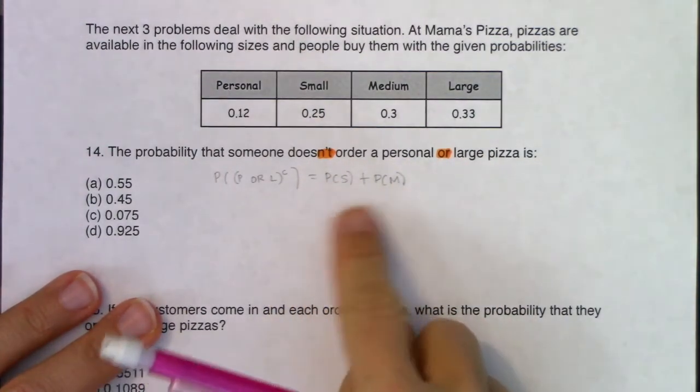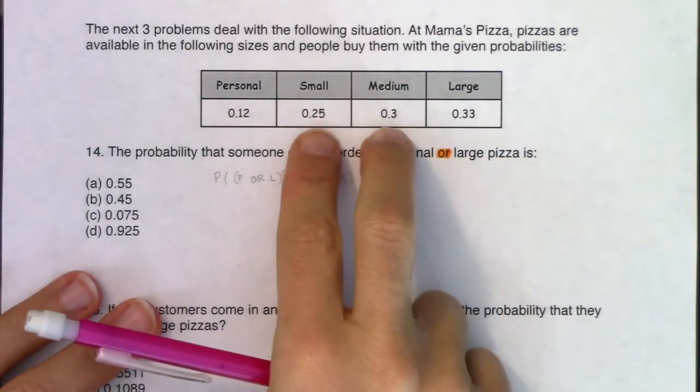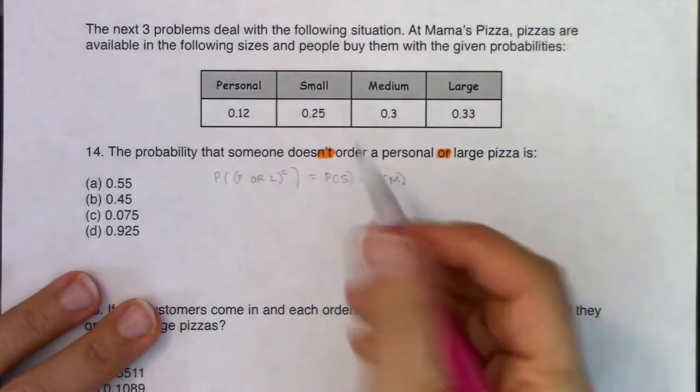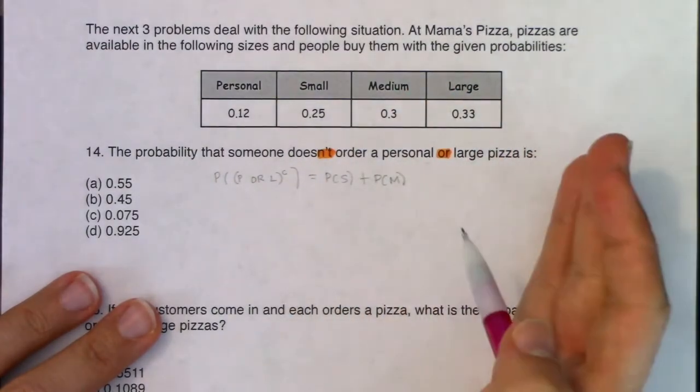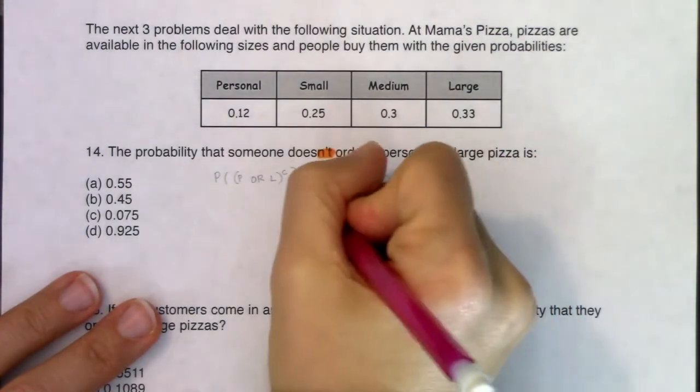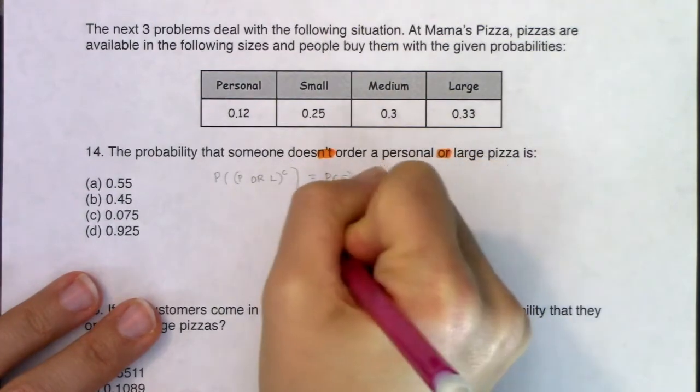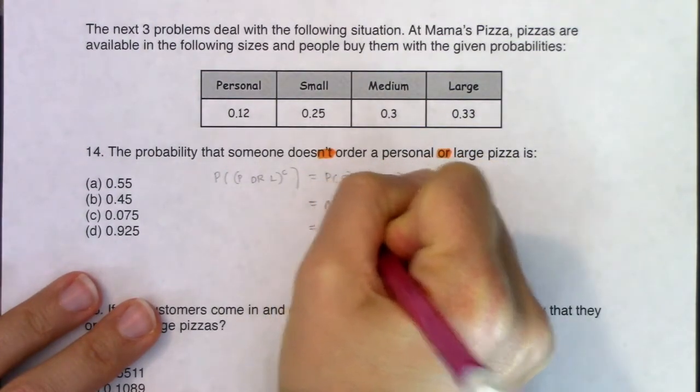So that's what's really happening. This is the probability that someone orders a small pizza or a medium pizza. With ORs we add the probabilities—we would subtract the overlap, but these are disjoint. When you order a pizza you're doing one of the two things, you're not going to order a small and a medium at the same time. So we got 0.25 plus 0.3, and when I take a look at that, there's a 55% chance that somebody will not order a personal or a large.